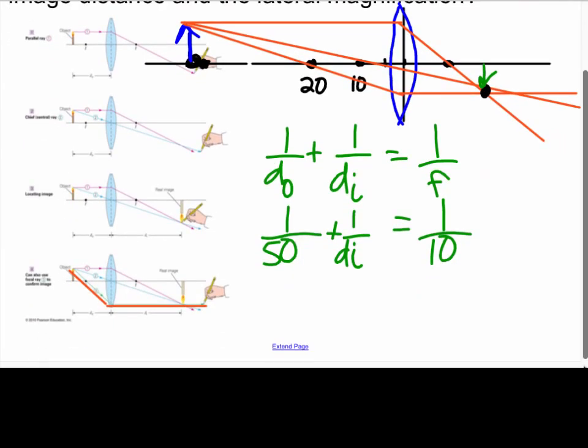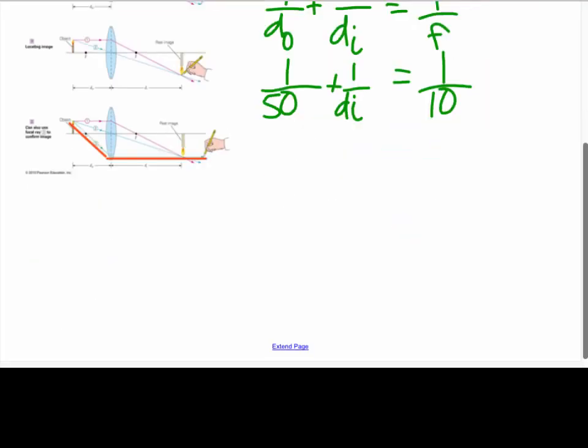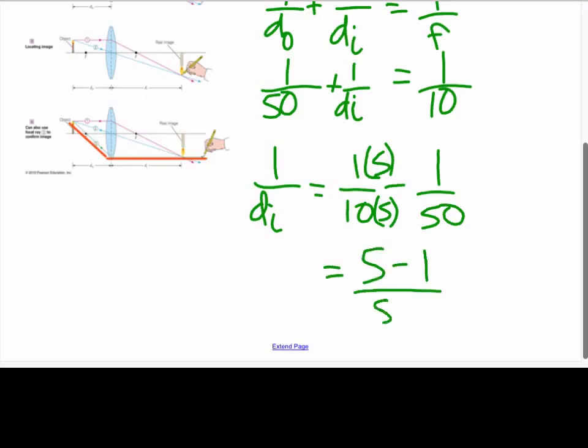Okay, you guys ready? So now, 1 over DI is equal to 1 tenth minus 1 over 50. Common denominator is 50. Although we could probably reduce it. So then that becomes 5 minus 1 all over 50, which is 4 over 50, which would be 2 over 25. Right? 1 over DI.